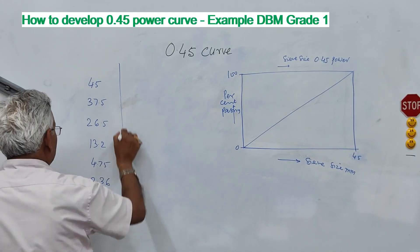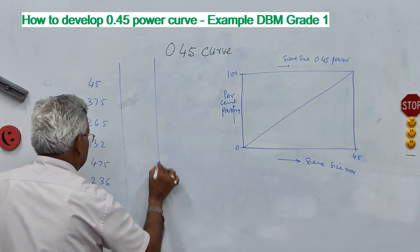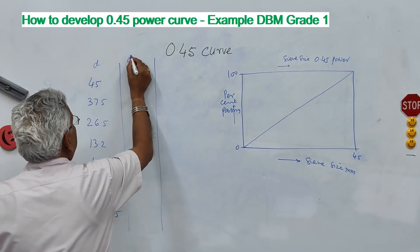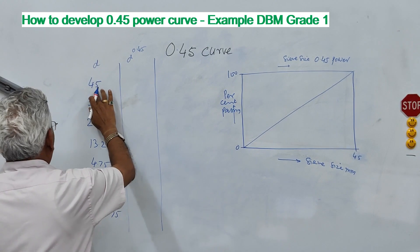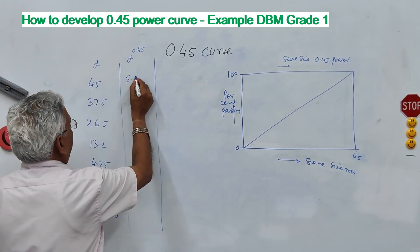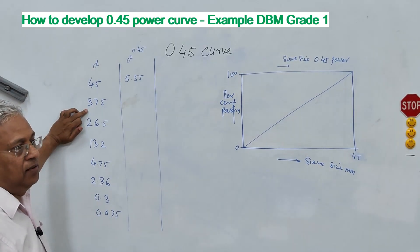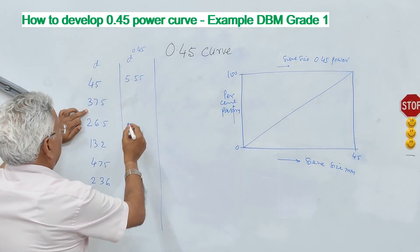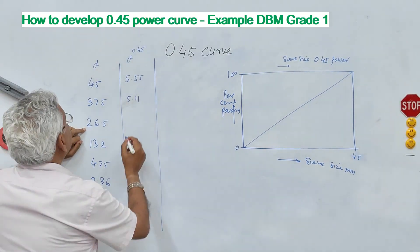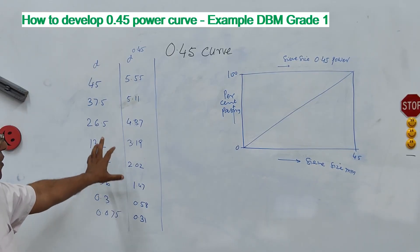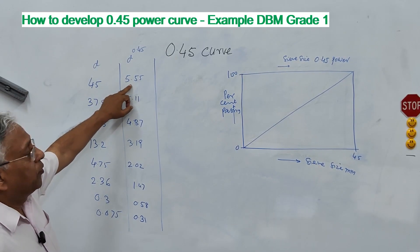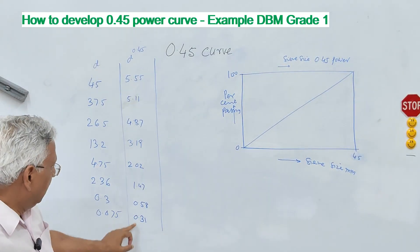Now if you take in the next column this is D in millimeter, D power 0.45. So this 45 becomes 5.55, 37.5 will be 5.11 and similarly all these values. So you have now calculated sieve size raised to 0.45, these are the values.